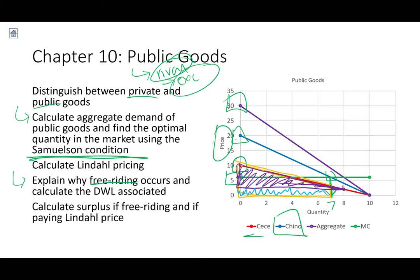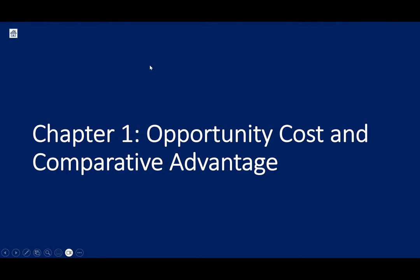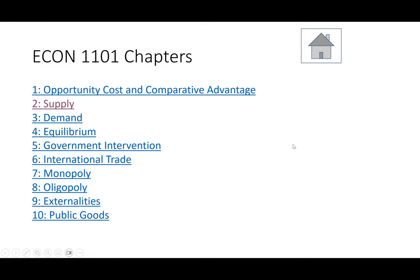Free riding occurs because the free rider's surplus is higher when free riding and enjoying the private provision than when paying the Lindahl price for the extra unit. This means everyone acting in their own self-interest doesn't maximize total surplus — a violation of the invisible hand principle, and an opportunity for government to step in. We will see deadweight loss in public goods markets, determined by the size of the under-provision and the gap between marginal cost and the aggregate demand curve at the private quantity.